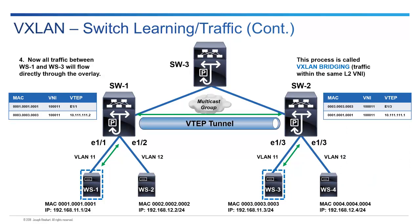Once MAC learning is complete, just as in a traditional Layer 2 network, everything goes across directly as unicast. When sending traffic within the same Layer 2 VNI across VXLAN, this is called VXLAN bridging — because you're sending traffic within the same Layer 2 VNI, just like intra-VLAN traffic in traditional networking.